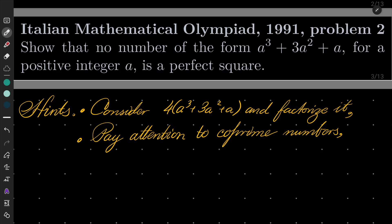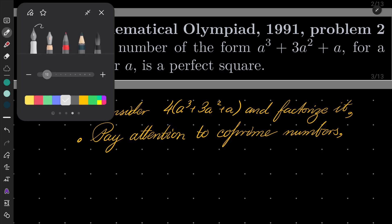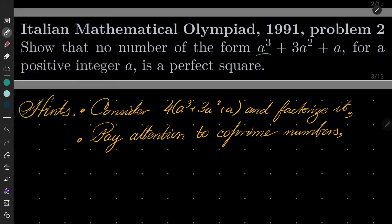We want to show that no number of the form a³ + 3a² + a, for a positive integer a, is a perfect square.